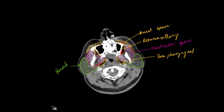We can now think about these other spaces. This one right here is the prevertebral space, and the one which is anterior to it and medial to the parapharyngeal space is actually the pharyngeal mucosal space.